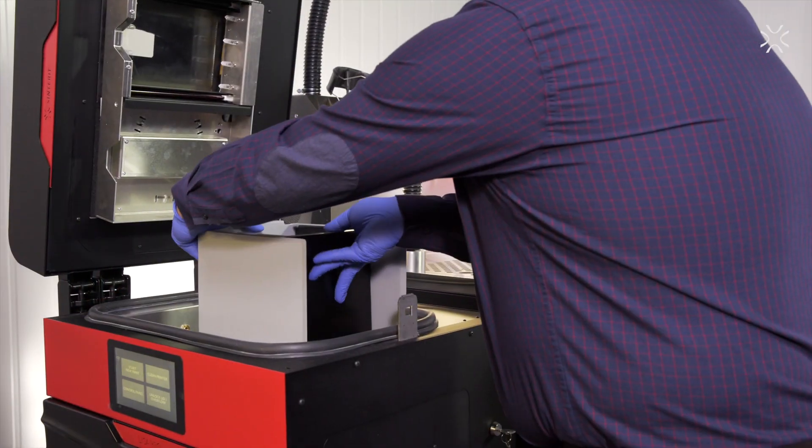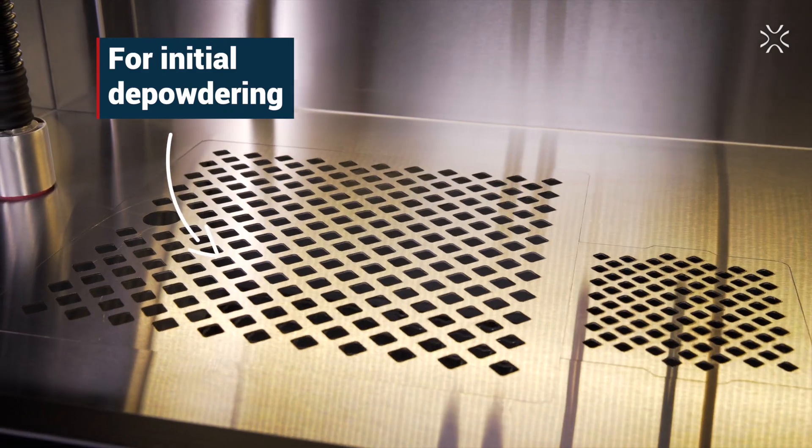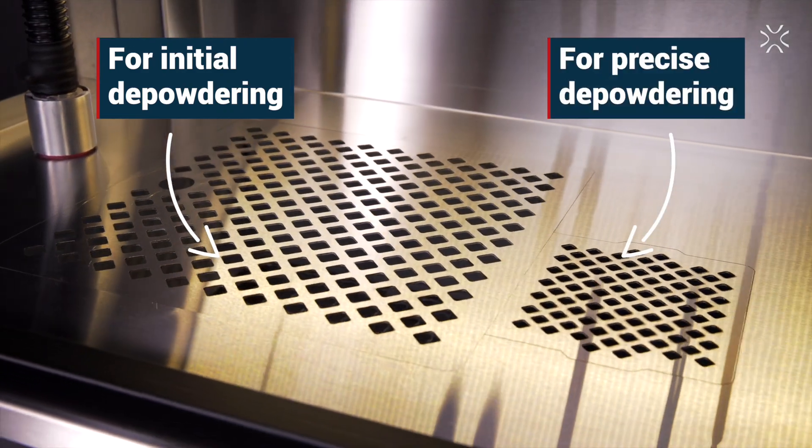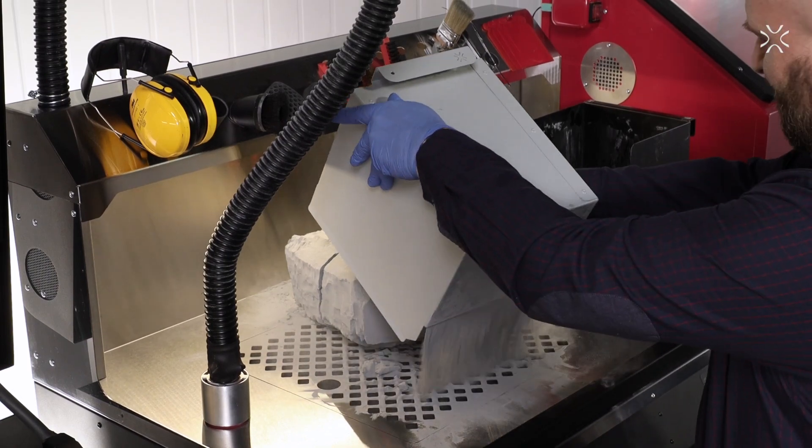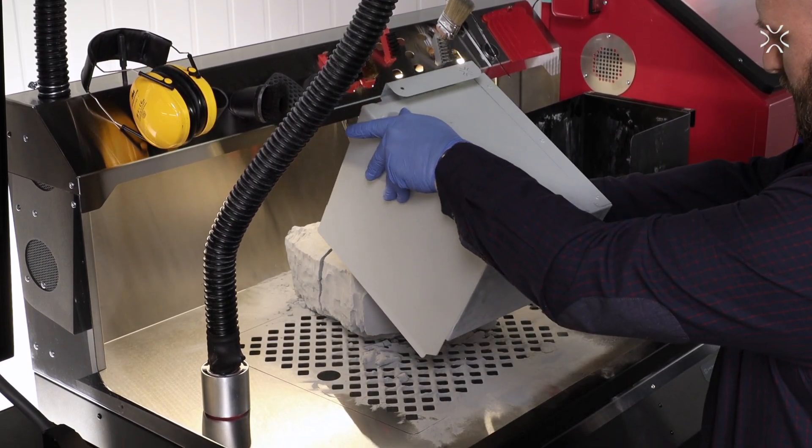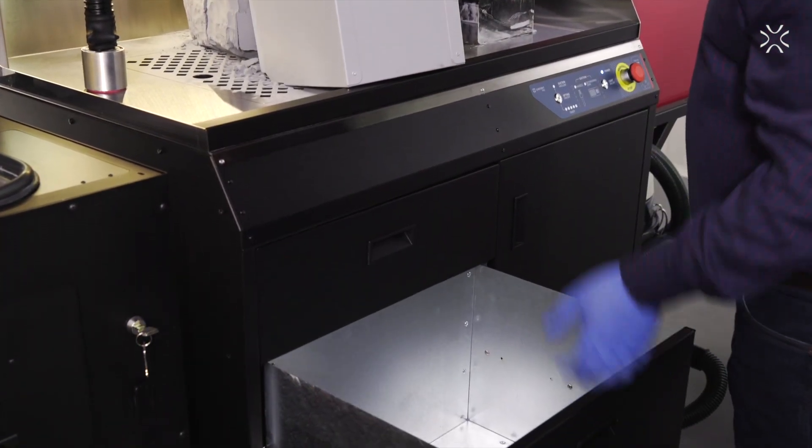You can do all depowdering processes on the PHS worktop. You can see two grids, a larger and a smaller one. Start cleaning the print on the larger one where initial depowdering takes place and finish on the smaller one. Remember all the tools that you need are always at hand.